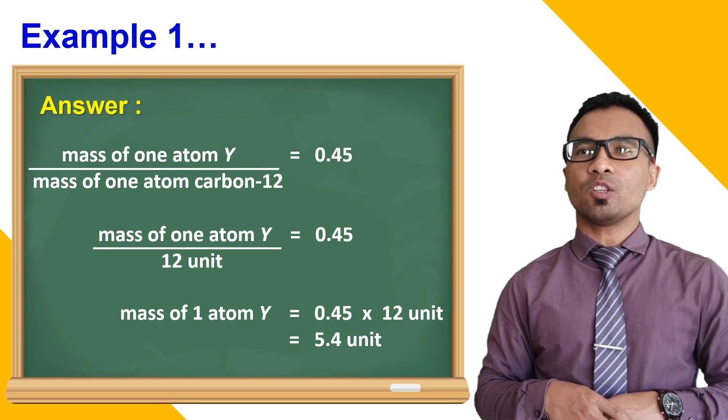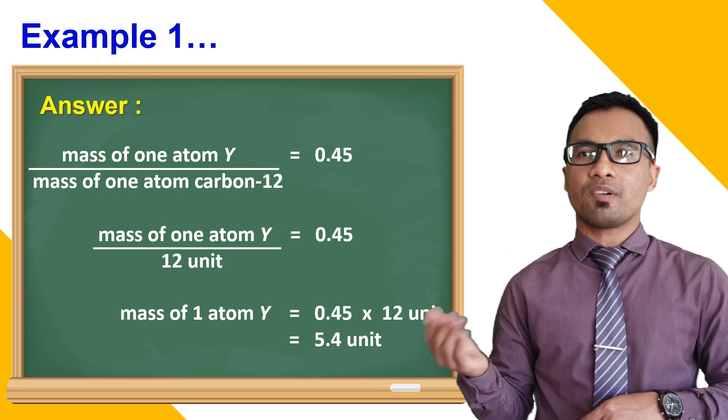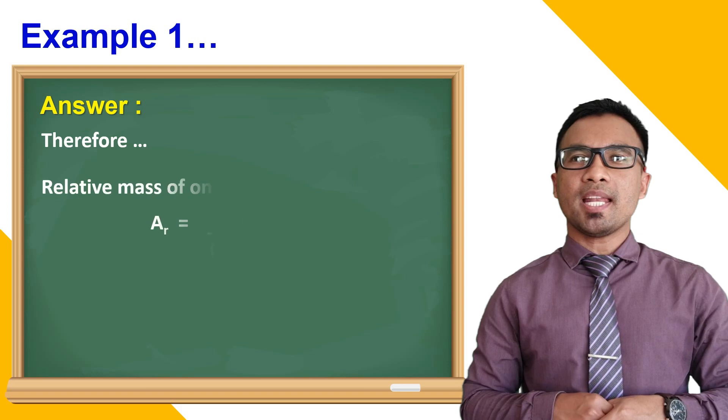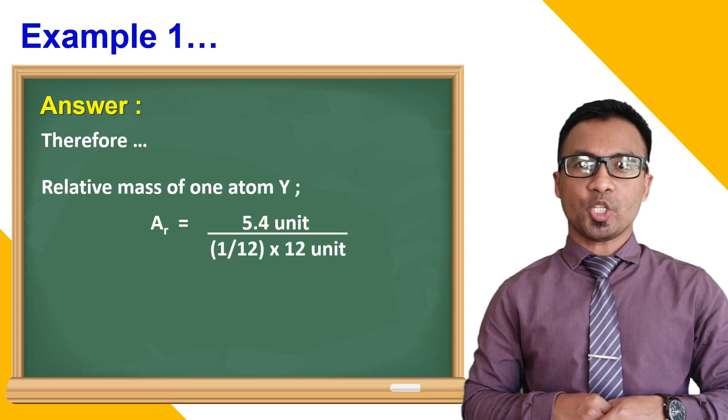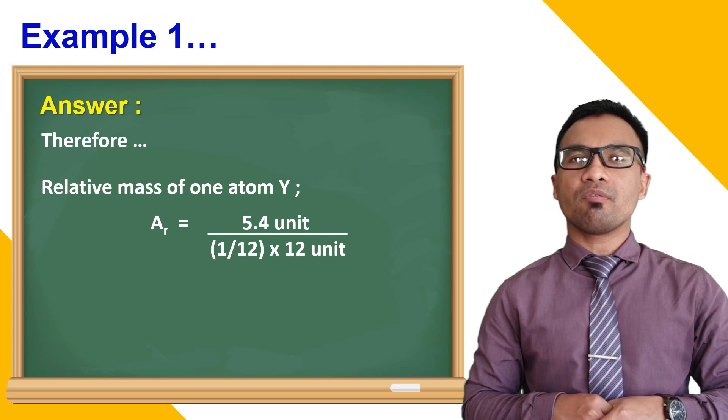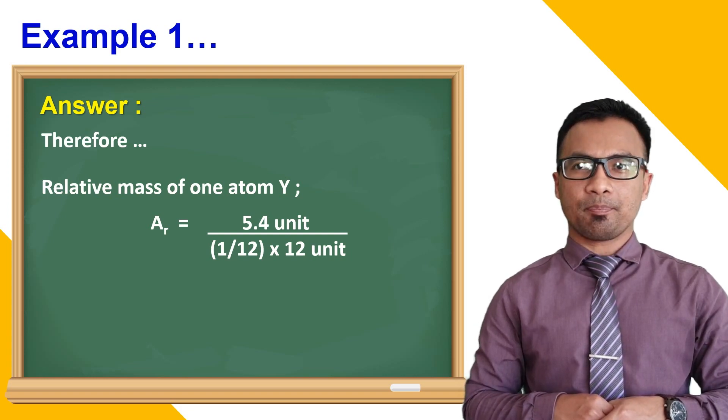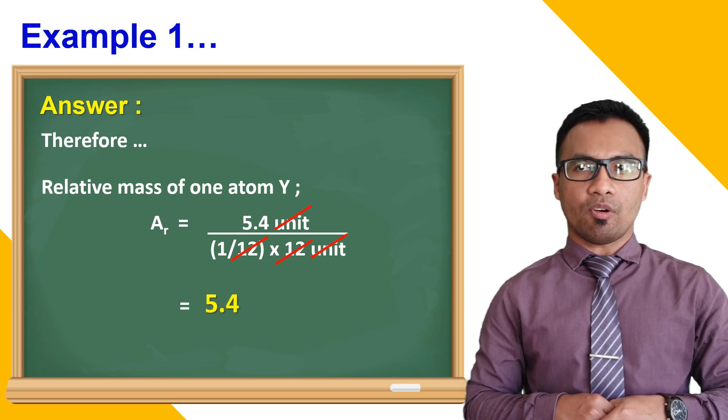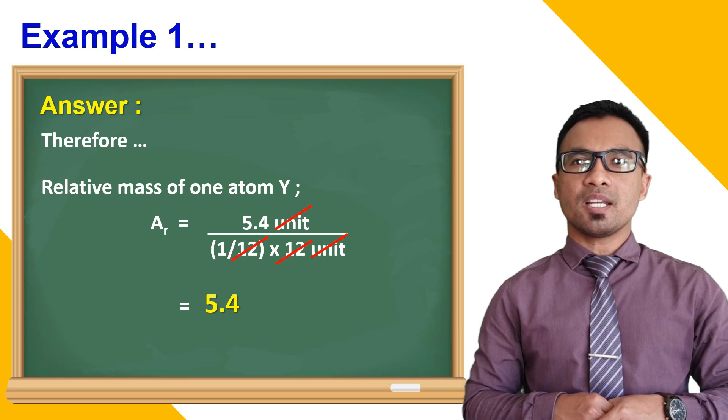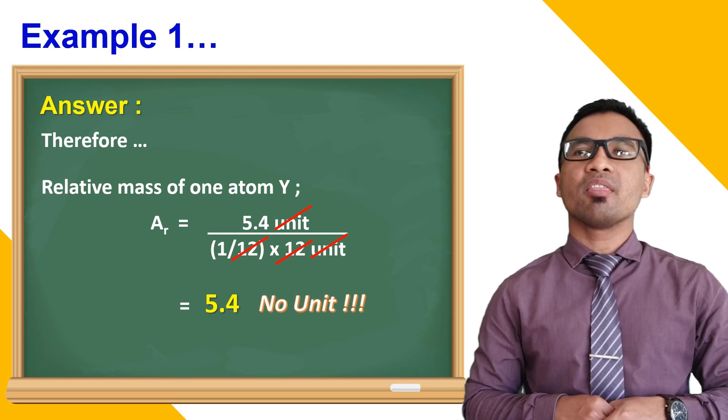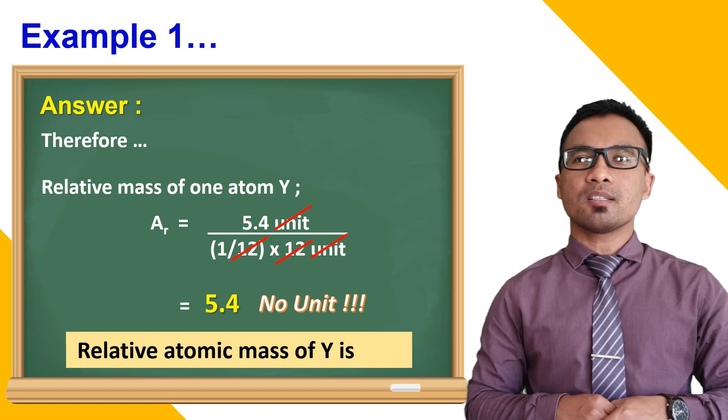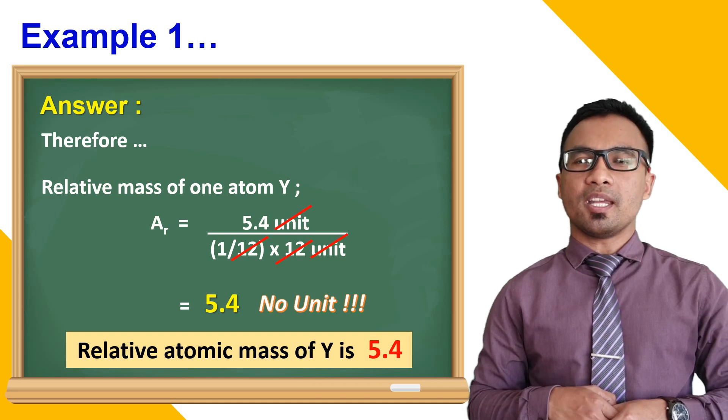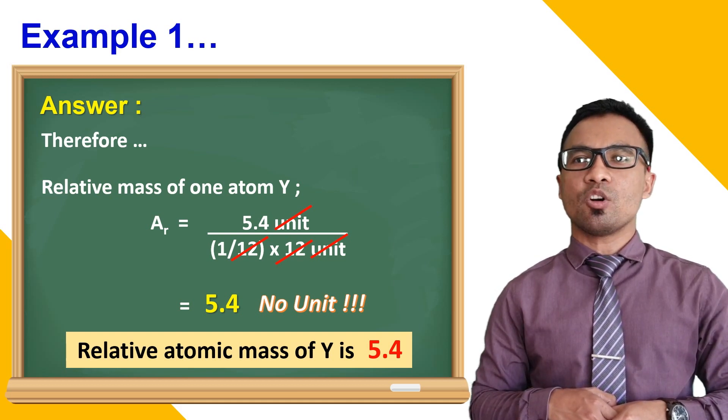Take note that this is not the relative atomic mass of Y yet. Because the relative atomic mass is a comparison to one twelfth of a carbon-12 atom. So, the relative mass of one atom of Y is 5.4 unit compared to one twelfth of carbon-12 atom. Cancelling all of this will give you 5.4. Since this is a comparison, it has no unit. Therefore, the relative atomic mass of Y is 5.4. You can practice more on this by attempting the questions in your tutorial too.